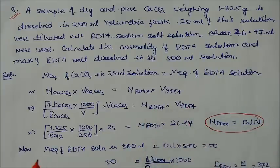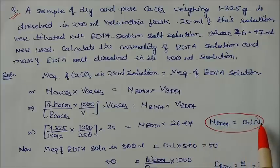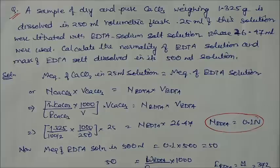The volume of EDTA is 26.47 ml. Solving, we get the normality of EDTA as 0.1 N in one liter solution. For 500 ml, the milliequivalents will be 0.1 × 500 = 50 milliequivalents.